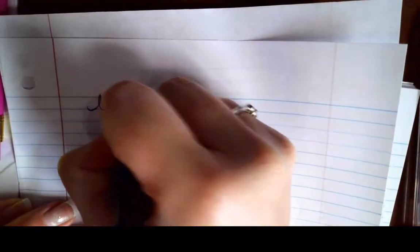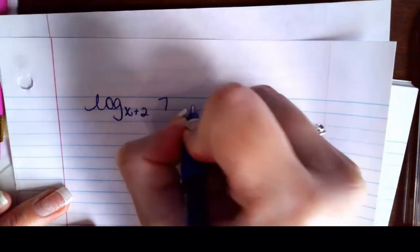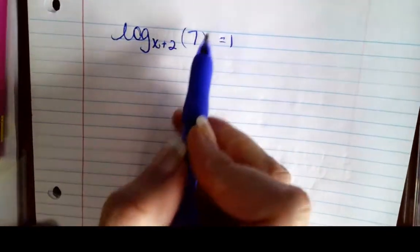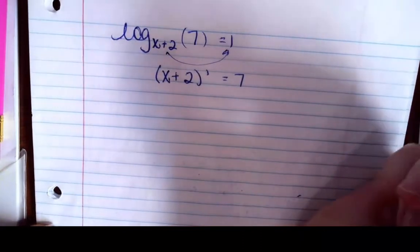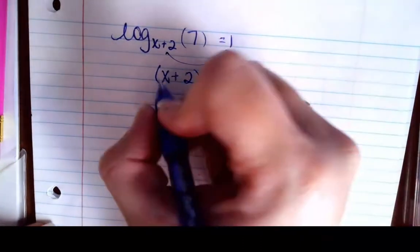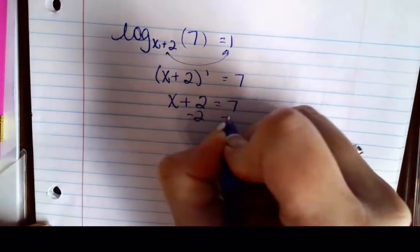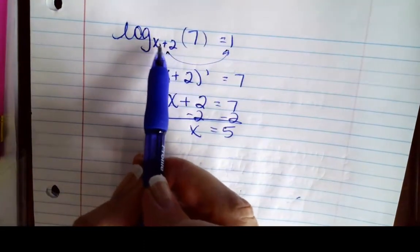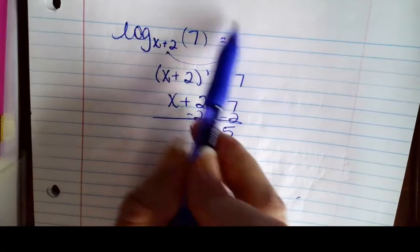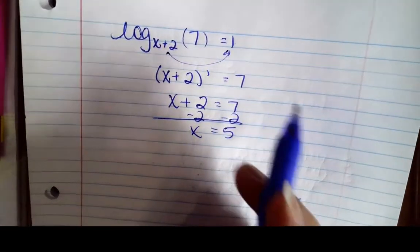Moving on, we have log base (x + 2) of 7 equals 1. If you want to put the argument in parentheses to be clearer, you can. I've got a log on one side and something else on the other, so I take (x + 2) to the first equals 7. Well, x + 2 to the first is just x + 2, so that equals 7. Subtract 2, and we get x equals 5. In other words, 5 plus 2 is 7, so 7 to the first is 7 — you're finding the exponent that makes an exponential true.